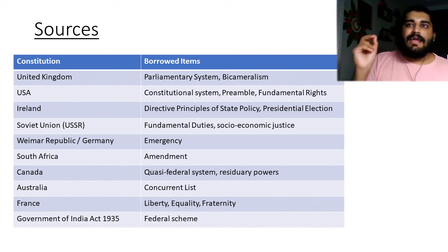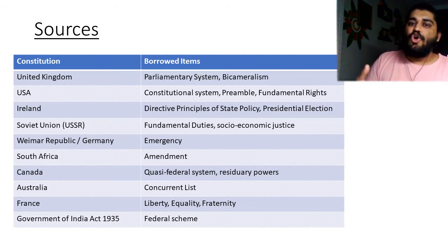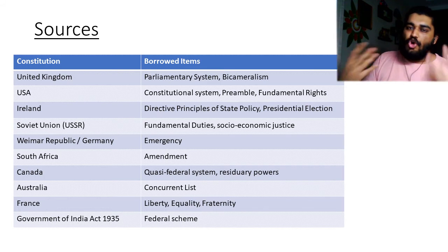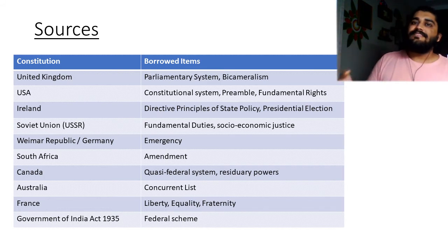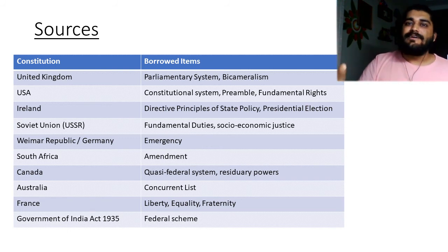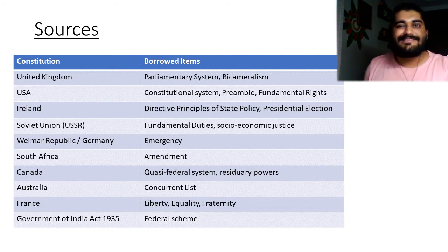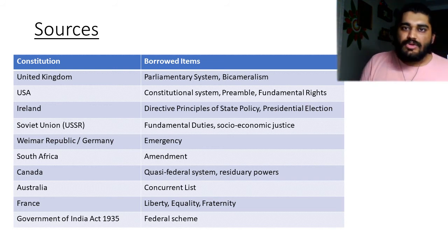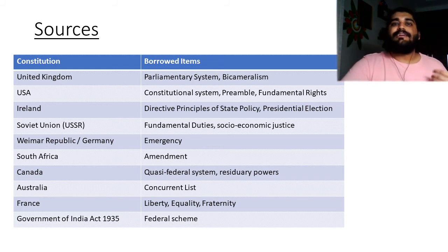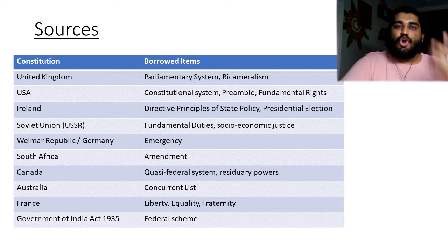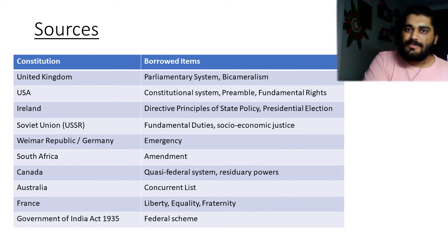There are several ideas that would not be represented in the union list, state list, or concurrent list. These are called residuary powers, on which anyone can make the law — the state as well as the center. Whenever there is a clash between laws made on residuary powers, the union wins again. The idea of residuary powers — that there are certain subjects that cannot be put down in lists — considering that at the time the constitution was made there were several entirely new ideas, these subjects could be residuary in nature. This idea of residuary powers again comes from Canada.